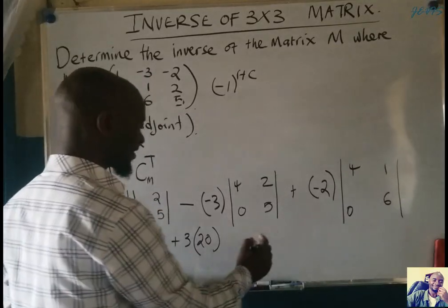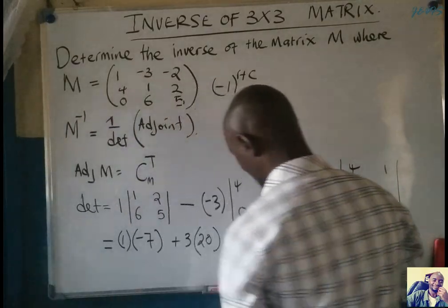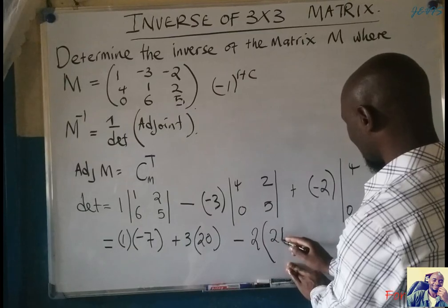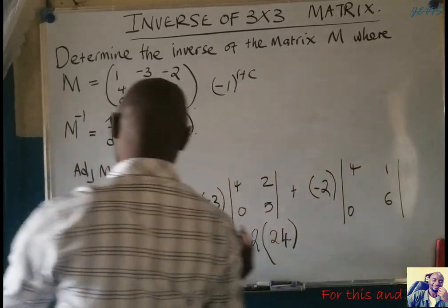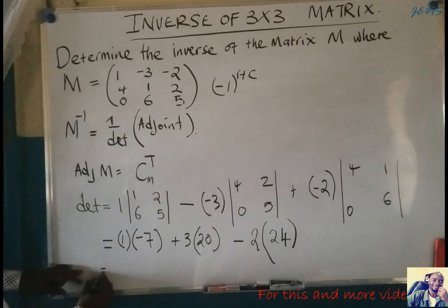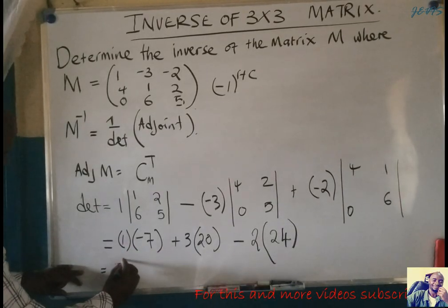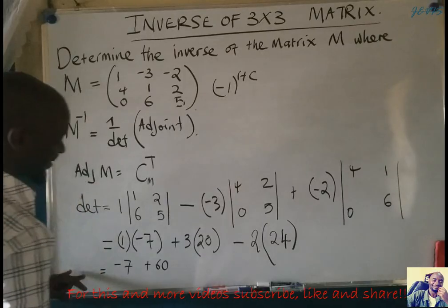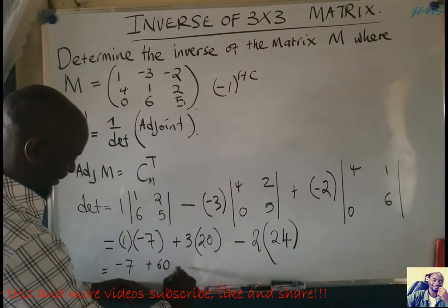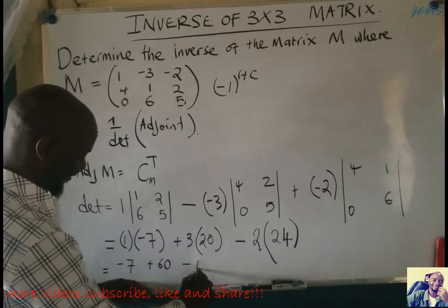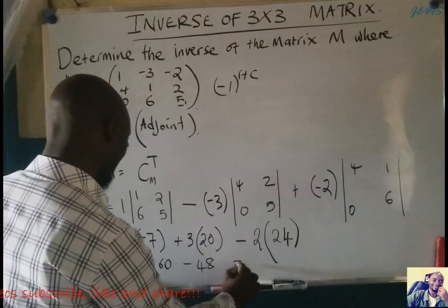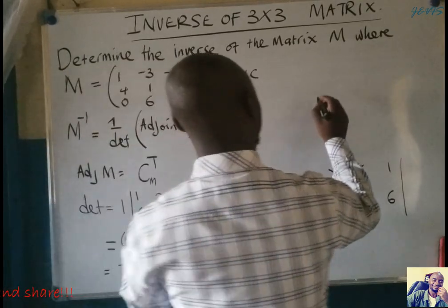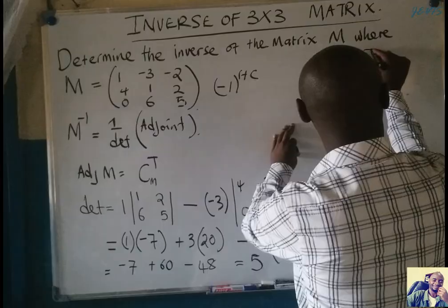Minus zero gives twenty. Then we have a term of minus two, and this multiplied by that gives twenty-four. Working out this determinant: that multiplied by that gives negative seven, plus sixty, and that multiplied by that gives negative forty-eight. Computing all of this together, the determinant is equal to five.